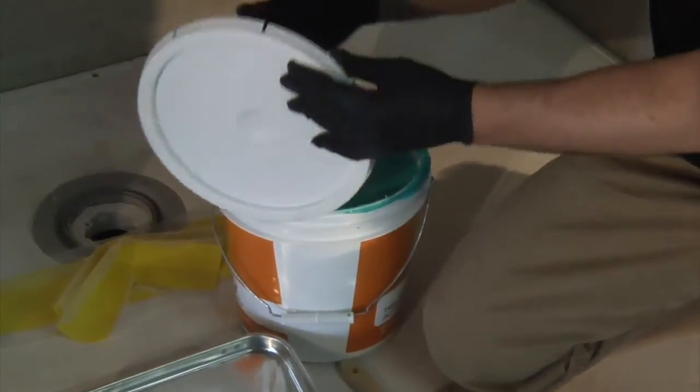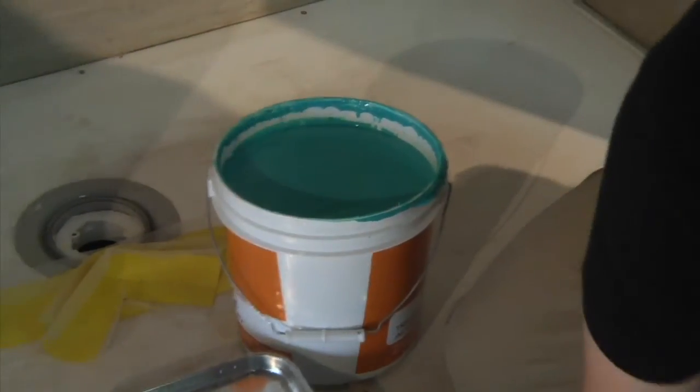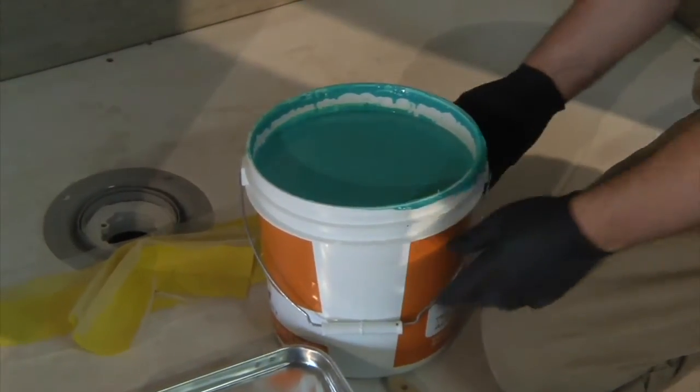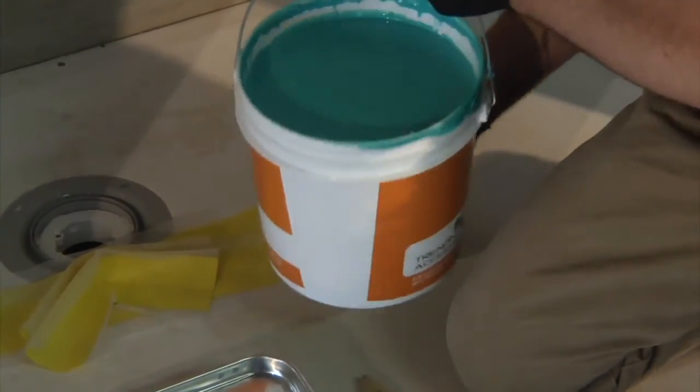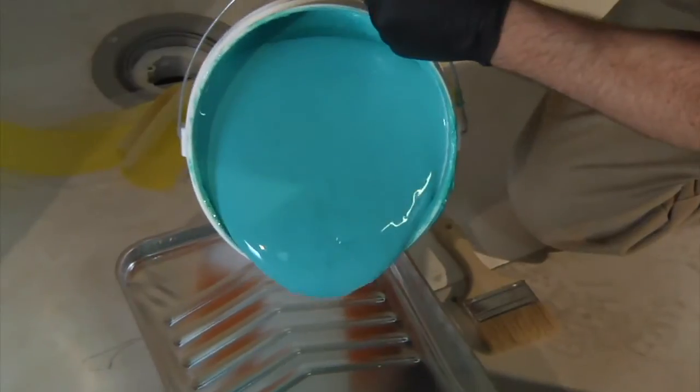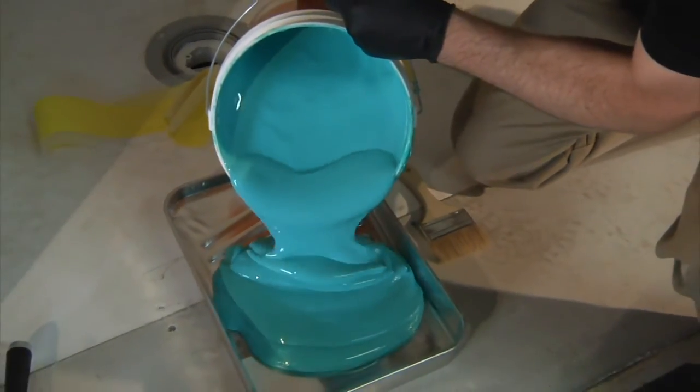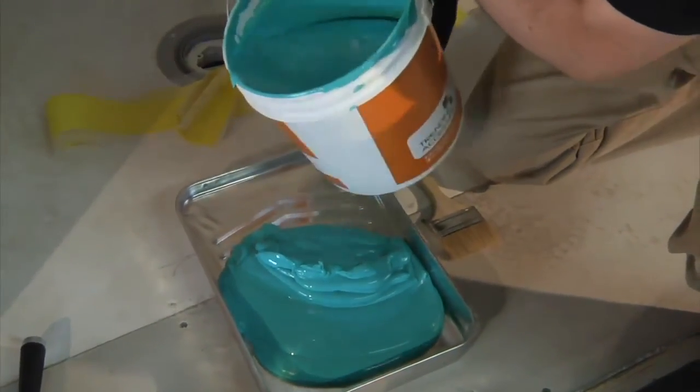open the bucket of waterproofing liquid and stir it well. It's liquid latex and has a thick texture, but you can easily apply it with a roller or a brush. We highly recommend wearing rubber gloves when working with the latex waterproofing. After it dries, it's very hard to clean off.